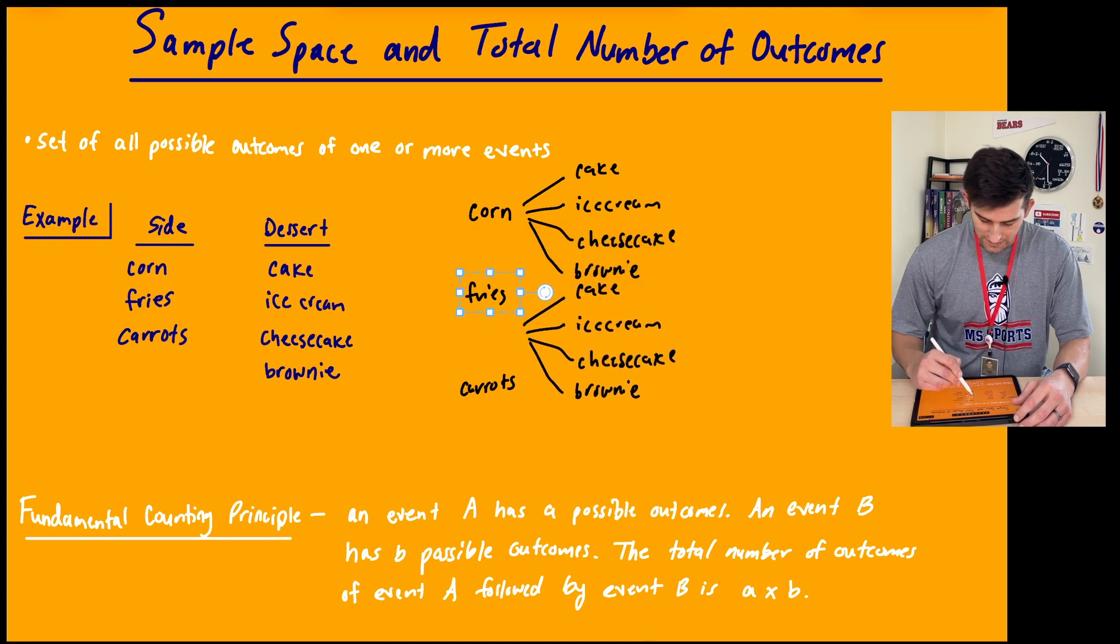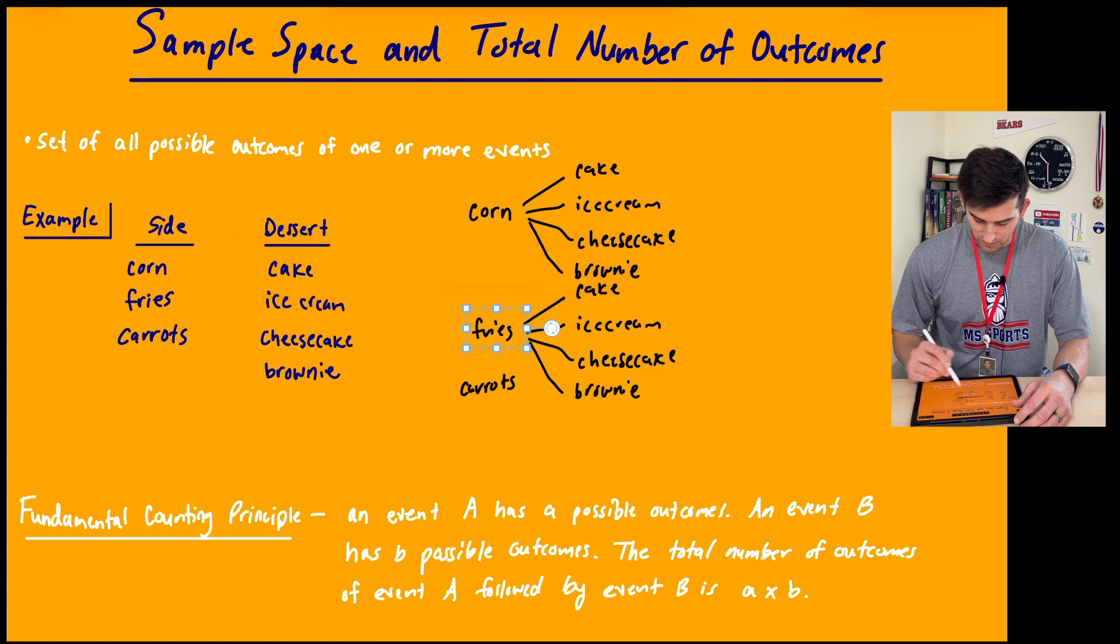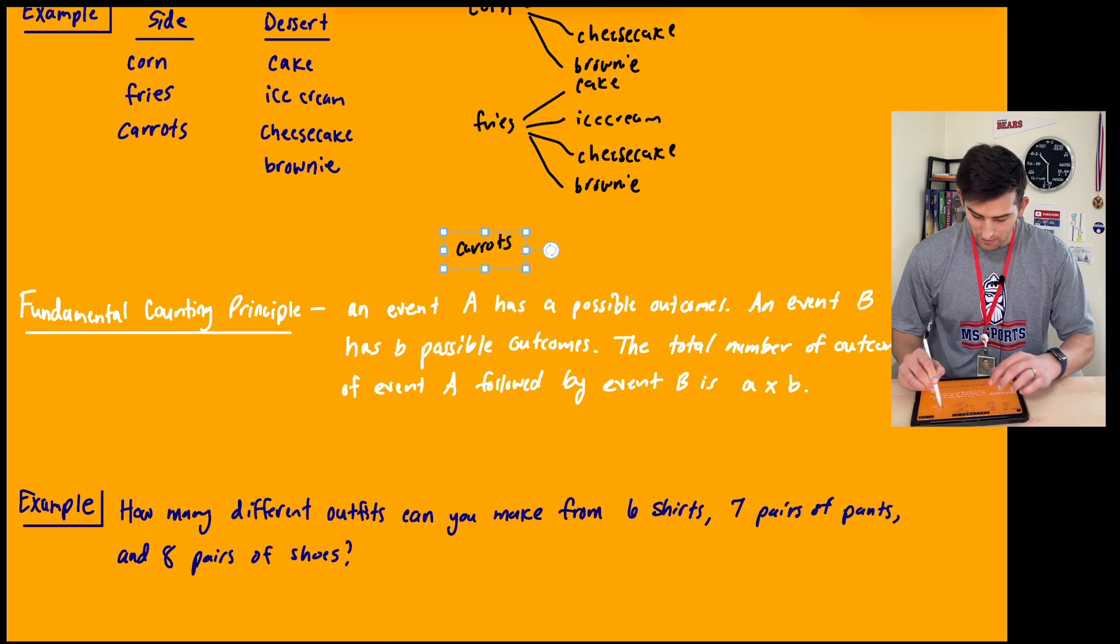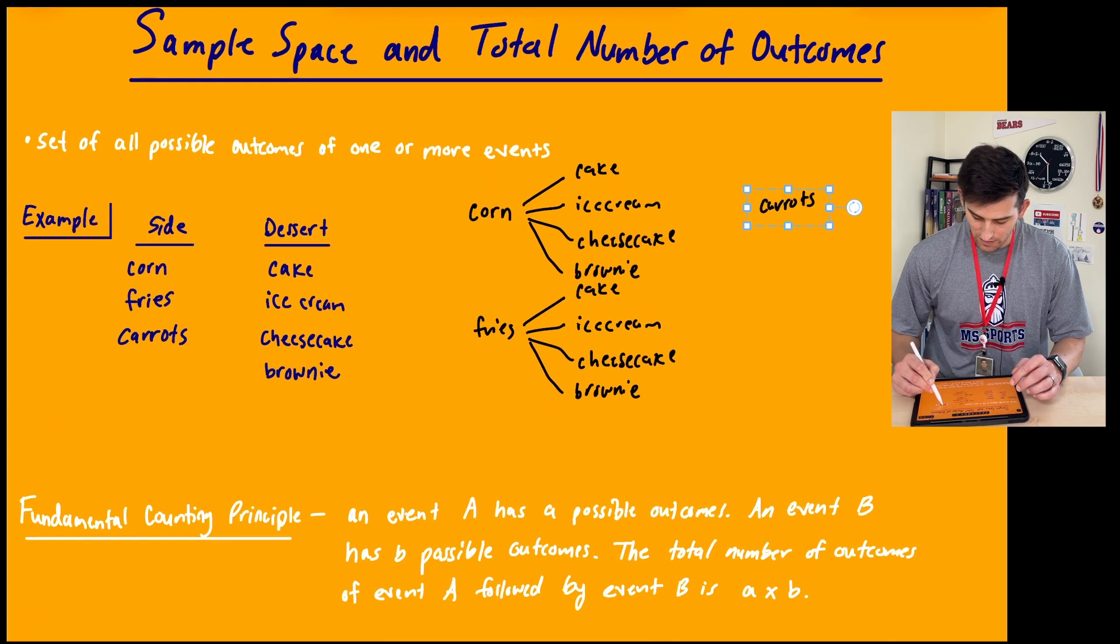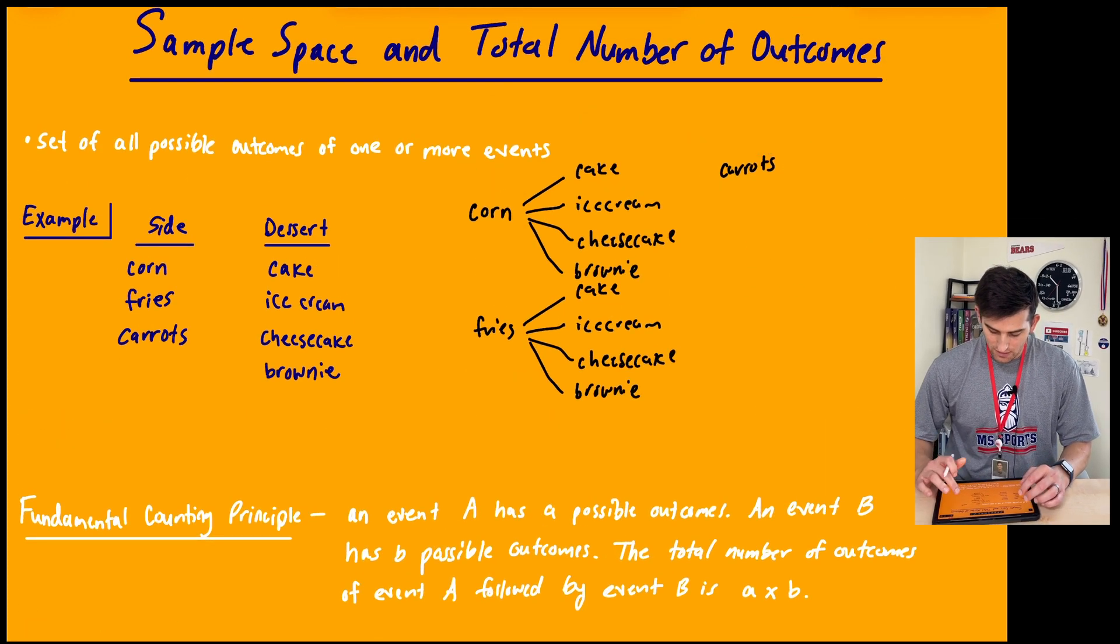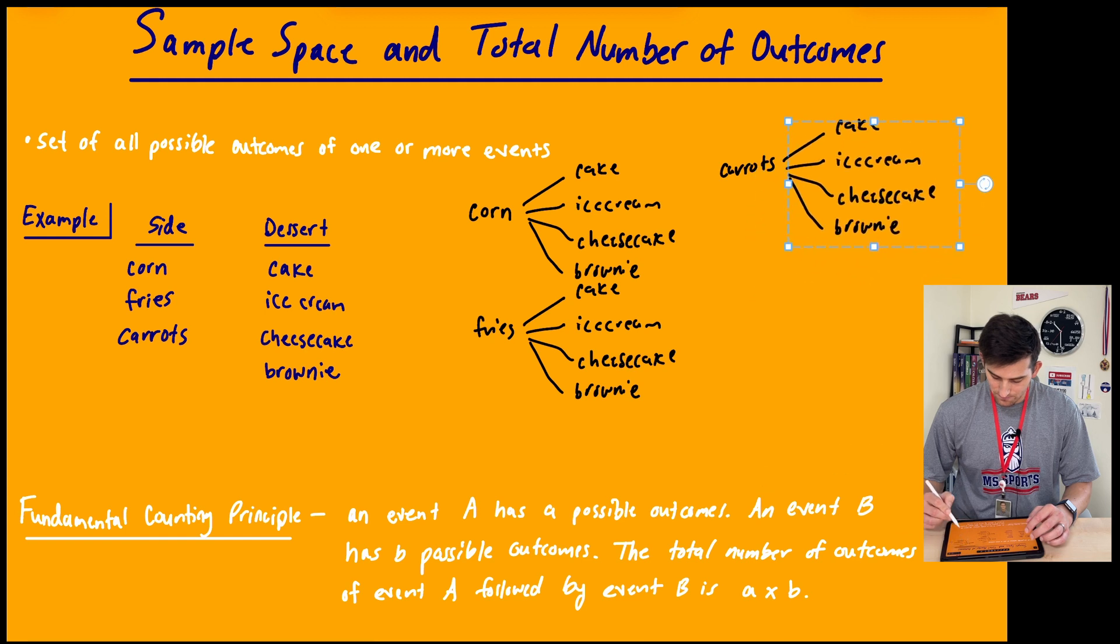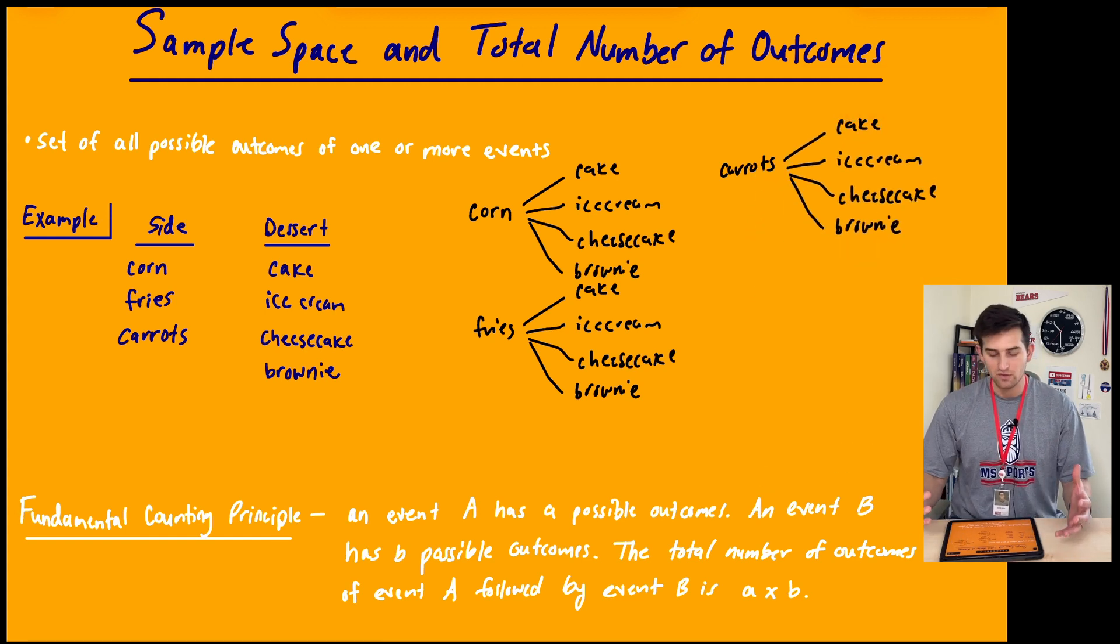So let's do it here and I can move my fries down. Let's move fries, there we go, just to line up better with it. And then let's move carrots over here to the side. And then let's paste our list of options again. So this would be what an example of a sample space would look like.